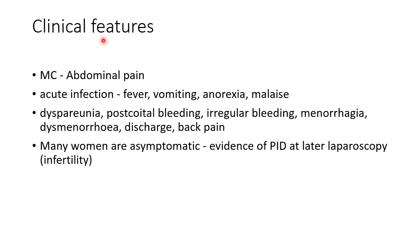The most common symptom of PID is abdominal pain. In acute infection, the patient can present with fever, vomiting, anorexia, and malaise. There can also be dyspareunia or painful sexual intercourse, postcoital bleeding, irregular bleeding, menorrhagia or heavy menstrual bleeding, dysmenorrhoea or painful menstruation, discharge, and back pain. Many women with PID are asymptomatic and PID is incidentally diagnosed at a later laparoscopy done for other causes like infertility.